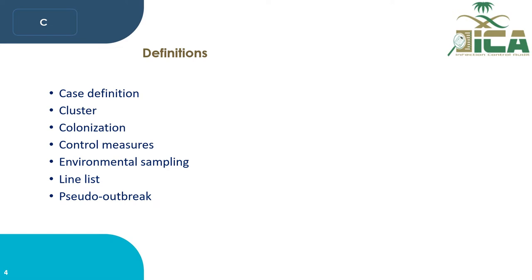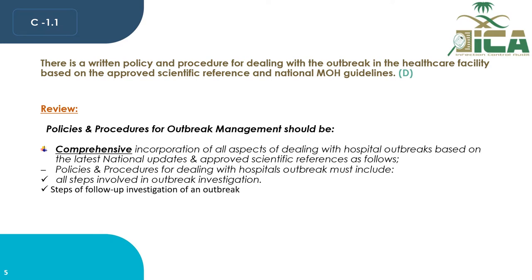Each hospital should have clear policies and procedures for managing a hospital-acquired infection outbreak, including early identification, initiation of appropriate control measures to prevent the spread of the organism, and assignment of roles and responsibilities to members. Policy and procedure should guide the staff for investigation and control of hospital-acquired infection outbreaks.